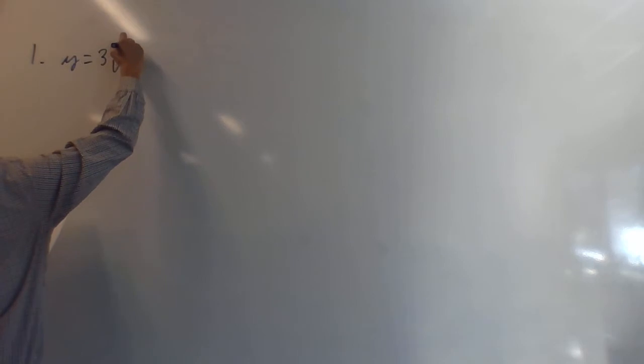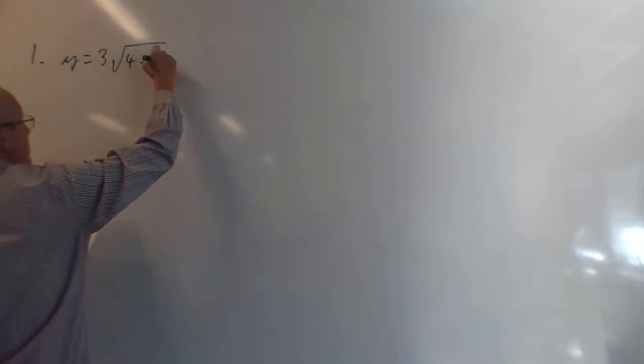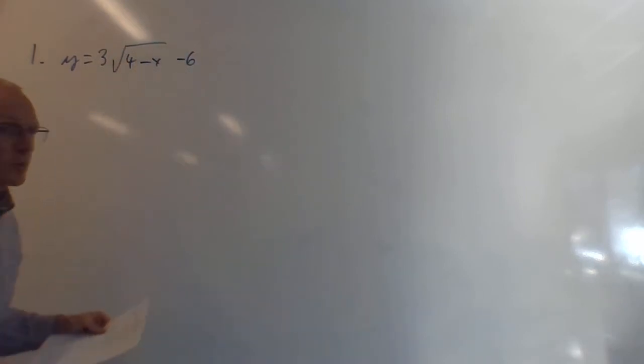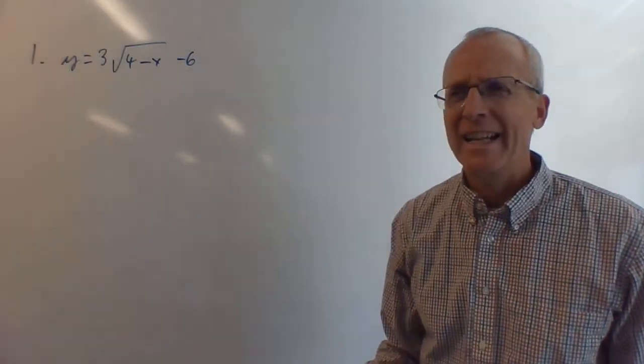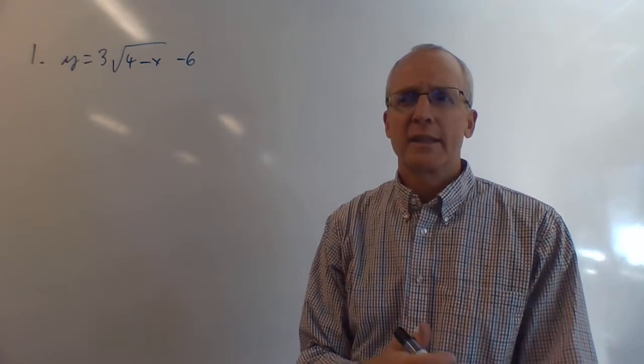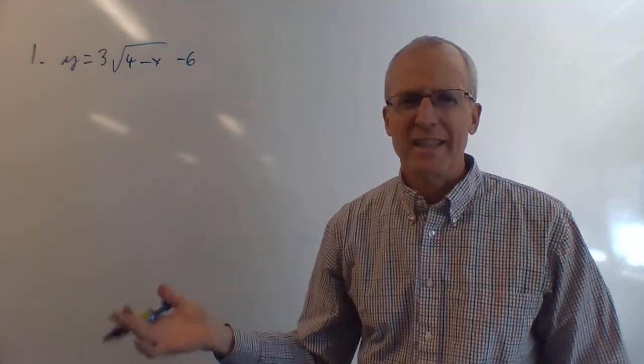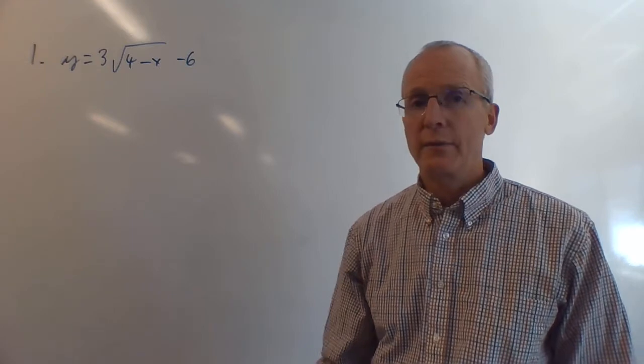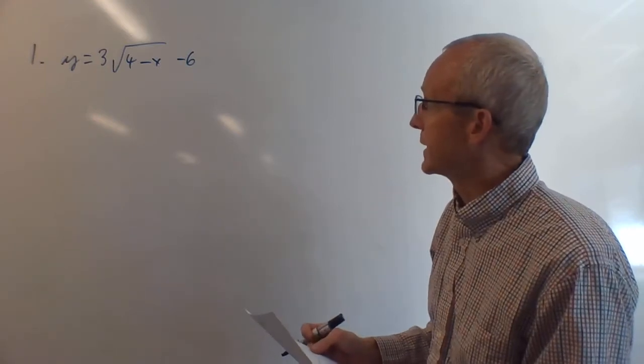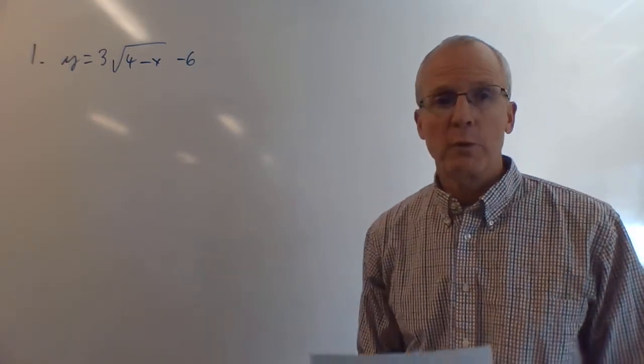For inverse functions, you solve for x as a function of y. So this is number one on the practice quiz. We have y = 3√(4 - x) - 6. We want x as a function of y, and then it's nice to switch the x's and y's because we like to write functions of x and call it the inverse.